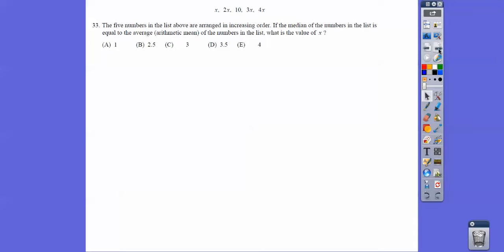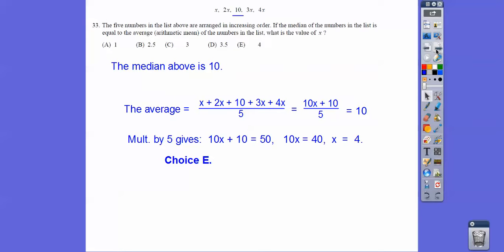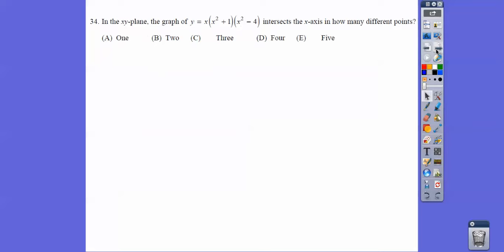The five numbers in the list are arranged in increasing order, so five numbers, this is the median. If the median is equal to the average, so 10 is the average, so we'll add these up and divide by 5 and make it equal to 10. And I get choice E. Remember you can pause this.